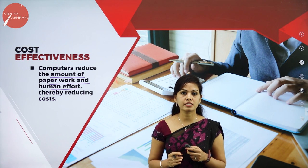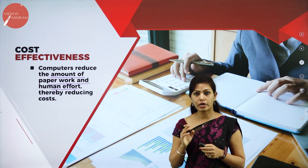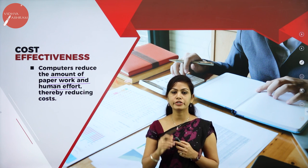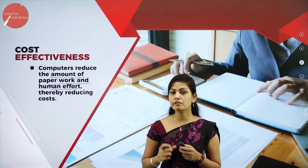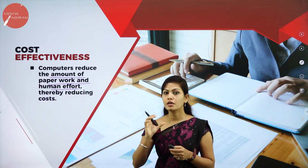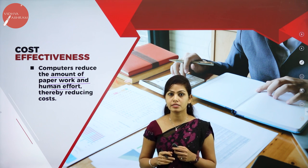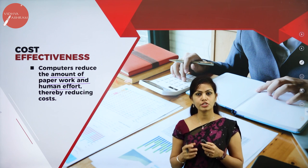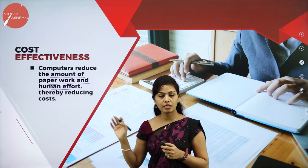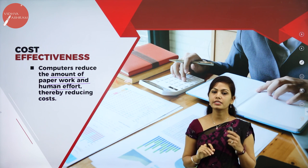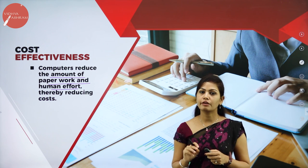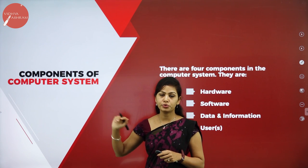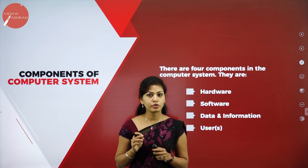So the seven important characteristics of computer are Speed, Storage, Accuracy, Diligence, Versatility, Flexibility, and Cost Effectiveness. A computer can store large amounts of data, its speed is very fast compared to human beings, and it can give accurate results without making any errors. Computers are used in scientific calculations, research fields, hospitals, and many more areas.